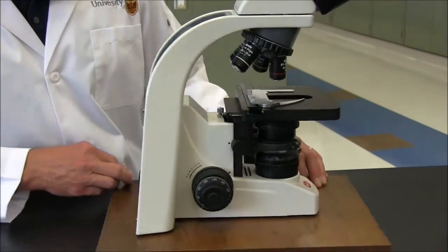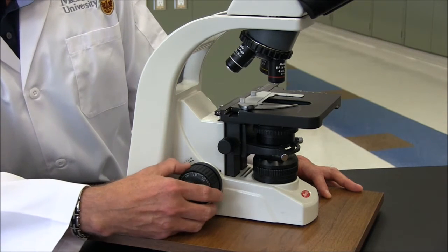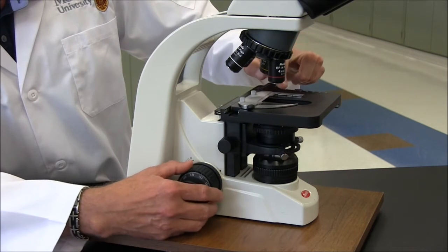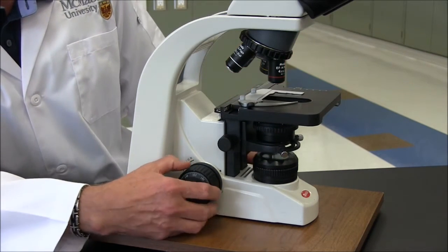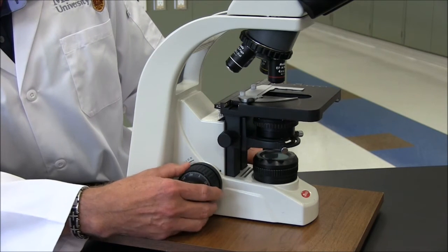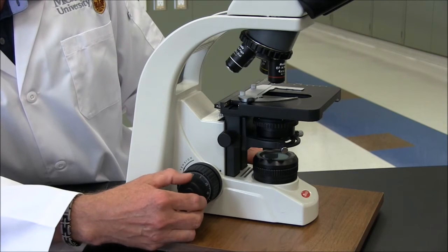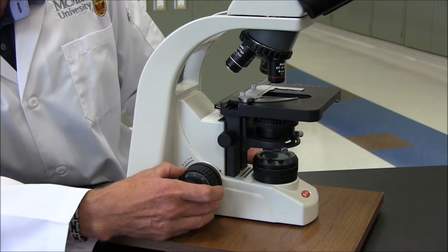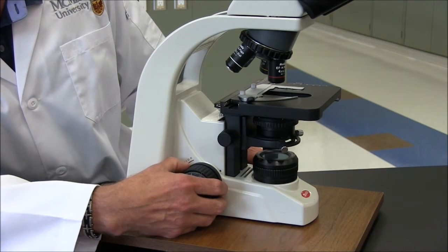On the left side of the microscope is the coarse adjustment knob and the fine adjustment knob, and these move the stage up and down and change the focal length between the objective and your slide. As they indicate, the coarse adjustment knob moves the slide up and down quite a bit, and when you get close to being in focus, use the fine focus knob for your final focusing. This tension knob controls how easy it is to move these two knobs here. Normally this is set so you don't have to change that.